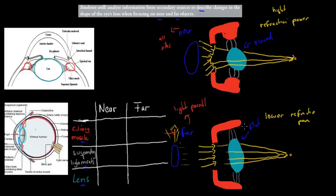For near vision, the shape of the lens is round, while for far vision, the shape of the lens is flat. That's the first thing to know. But you also need to know the other structures involved — the ciliary muscles and the suspensory ligaments — and the process by which the ciliary muscle either contracting or relaxing produces these lens shapes.